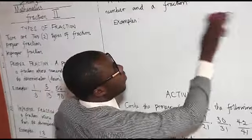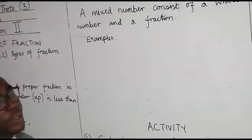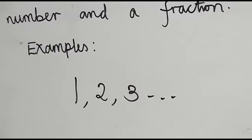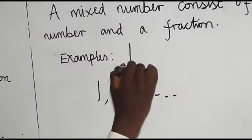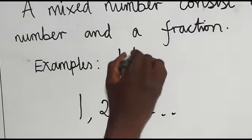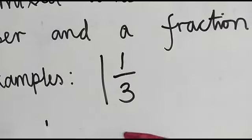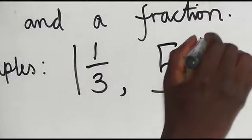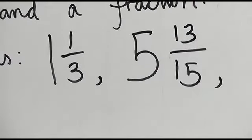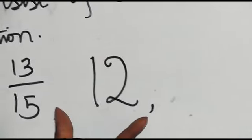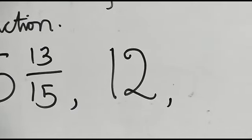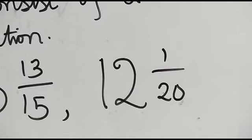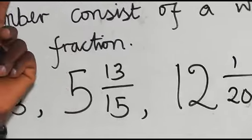Let's go to the number form. Whole numbers are numbers that start with 1, 2, 3 — thousands, millions, trillions. So when you match a whole number together with any fraction, let's say 1 over 3, that is an example of a mixed number. For example, 5 whole number and 13 over 15; or 12 whole number and 1 over 20. So far as it is a whole number merged with a fraction, that makes it a mixed number.